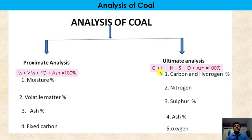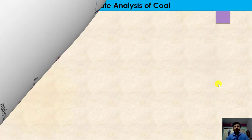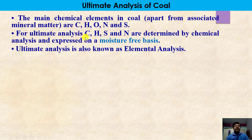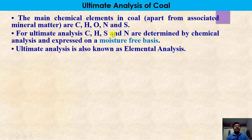Whereas in the ultimate analysis, elements like carbon, hydrogen, nitrogen, sulfur, oxygen, and ash percentage are determined. Carbon, hydrogen, sulfur, and nitrogen are determined by chemical analysis on a moisture-free basis. And oxygen is determined by 100 minus the percentage of carbon, hydrogen, sulfur, nitrogen, and ash. The ultimate analysis is also known as elemental analysis.